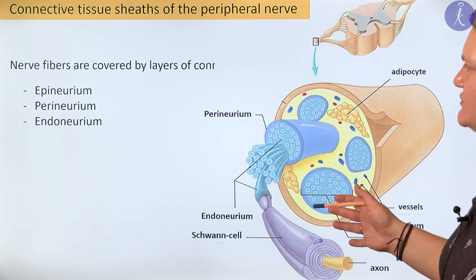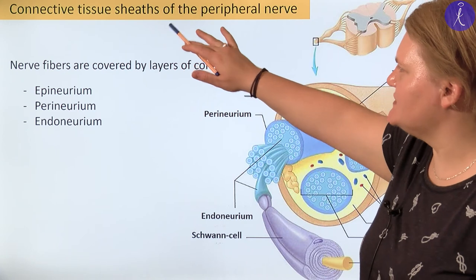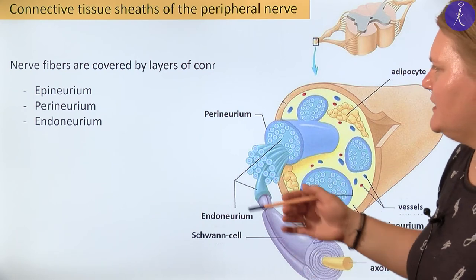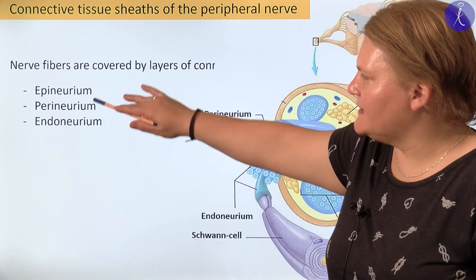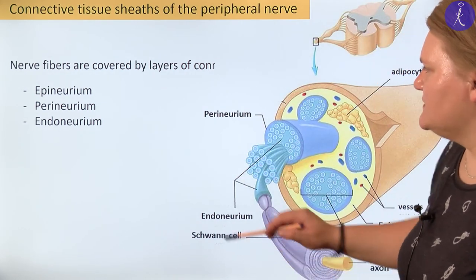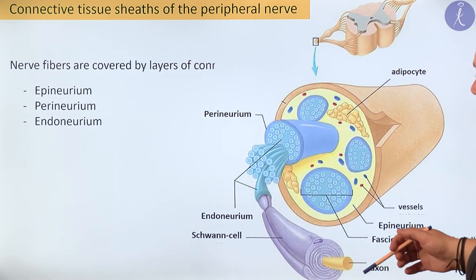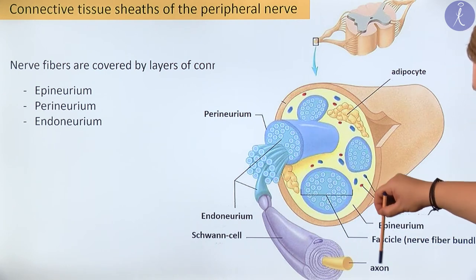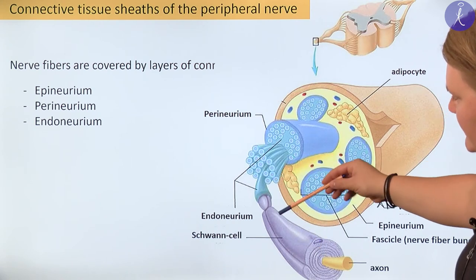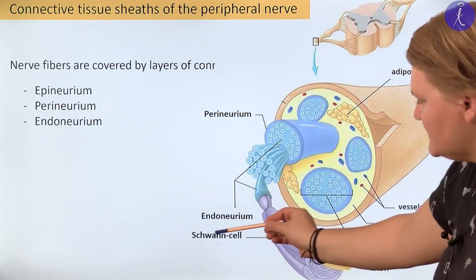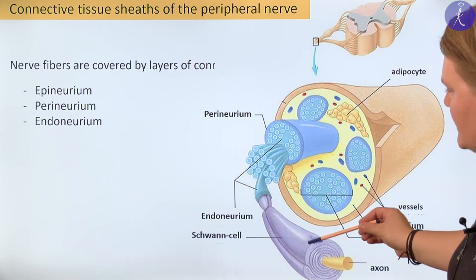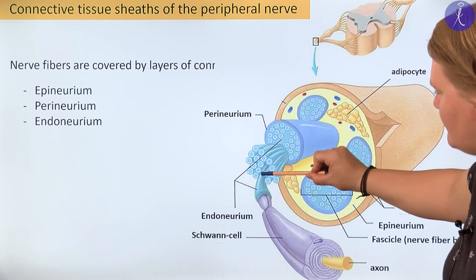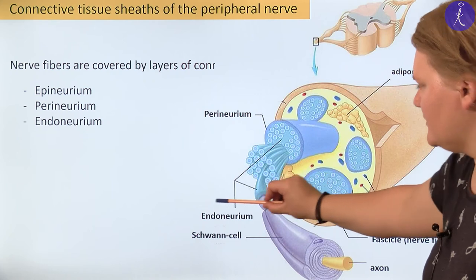Now I would like to talk about the connective tissue sheets we have in the peripheral nerve. Starting from inward outward, these are called endoneurium, perineurium, and epineurium. Starting with the endoneurium: if the yellow structure is the axon, around the axon there is a sheet of glial cell — here a Schwann cell forming the myelin sheet — and between the nerve fibers this bluish part is exactly the endoneurium.